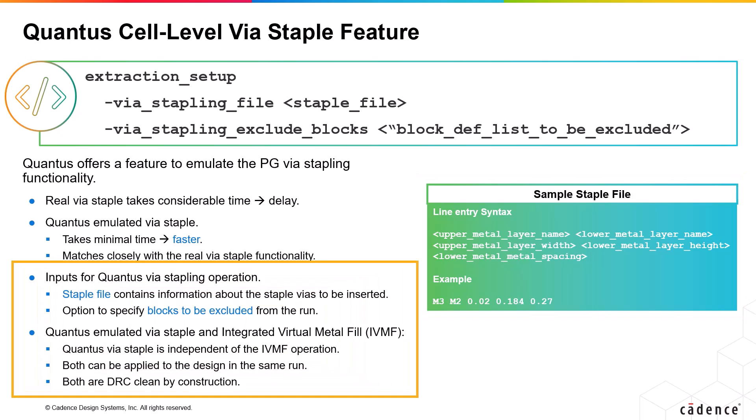If certain blocks of a multi-def design are to be excluded from the Qantas VIA stapling operation, then use the VIA stapling exclude blocks option. The VIA staple functionality in Qantas is independent of the integrated virtual metal fill functionality, and both can be applied to the design in the same run. The emulated behavior of VIA staple and IVMF are both DRC clean by construction.